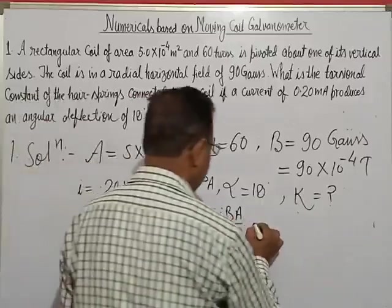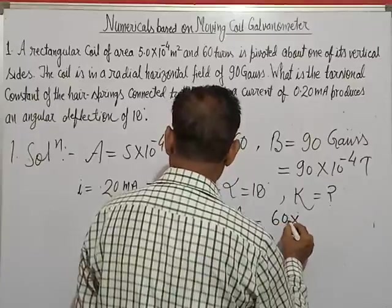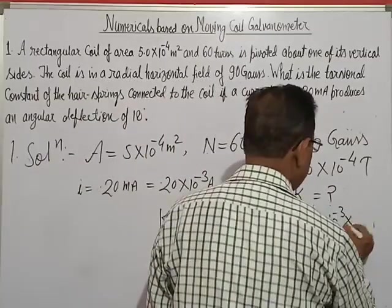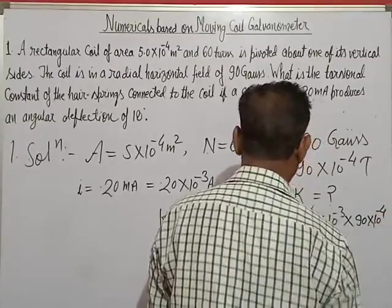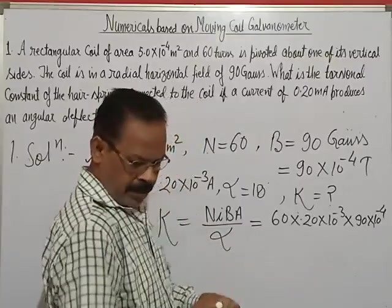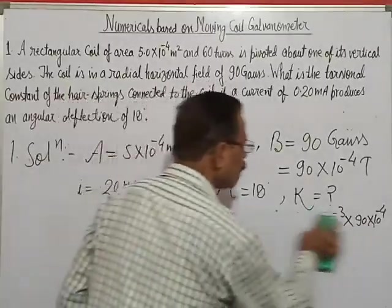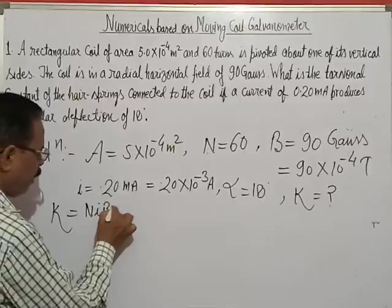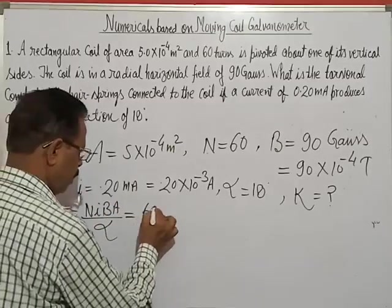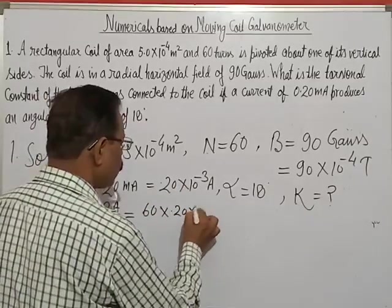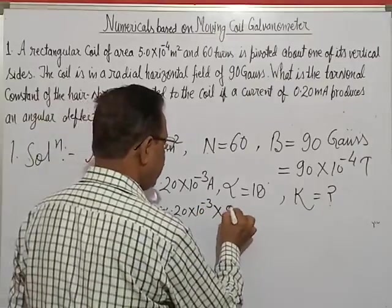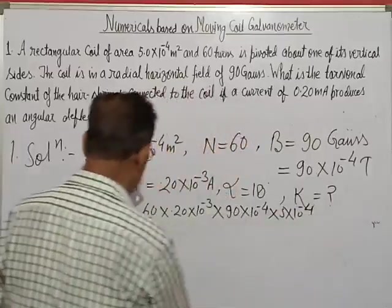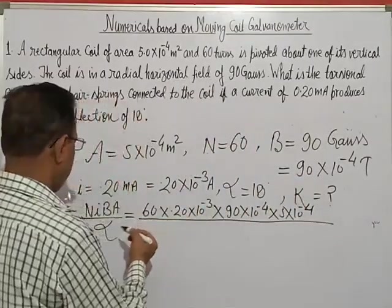सारे values substitute कर लेते हैं। N कितना दिया? 60। I दिया कितना? 0.20×10⁻³ ampere। B कितना दिया है? 90×10⁻⁴ tesla। Area दिया है 5×10⁻⁴ meter square। Upon alpha — alpha दिया है 18 degrees।